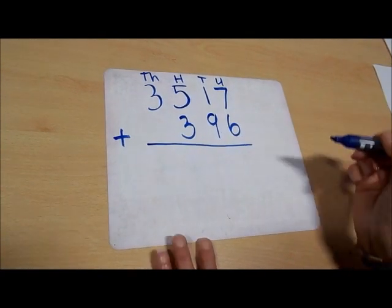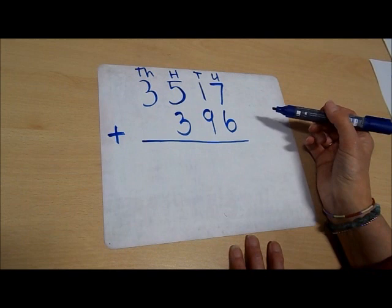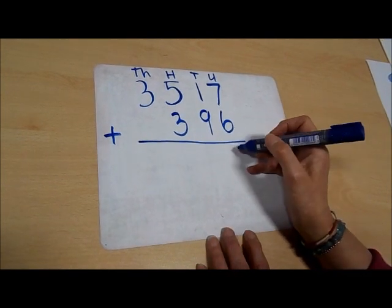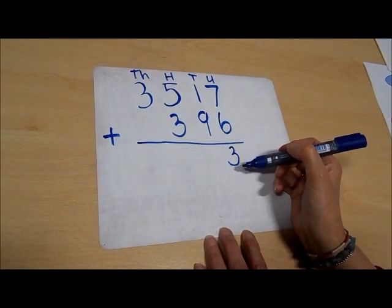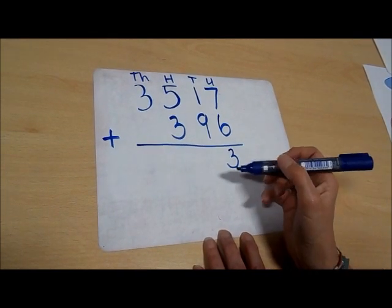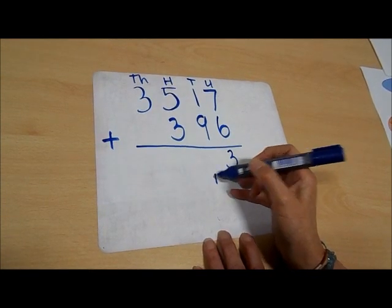Now we're going to start to add. We have 7 and 6, and 7 and 6 makes 13. So we put the 3 underneath into the units column and we carry the 10 from the 13 into the tens column.